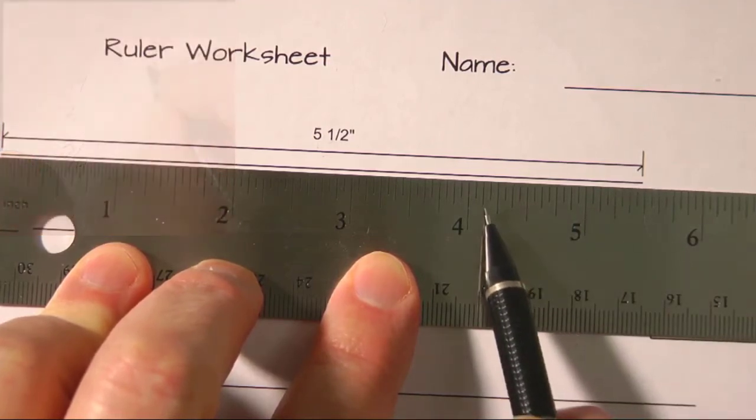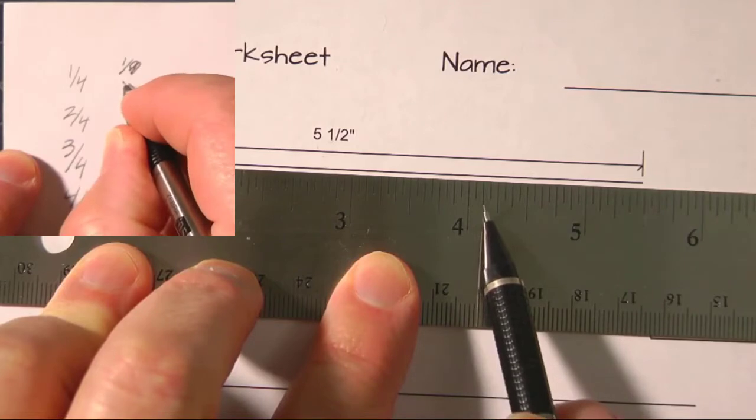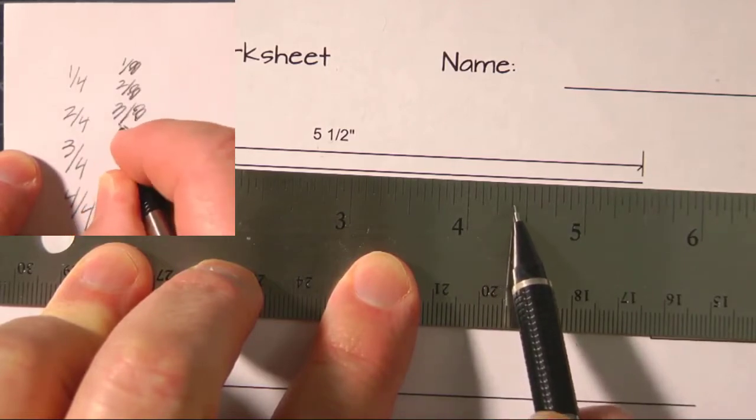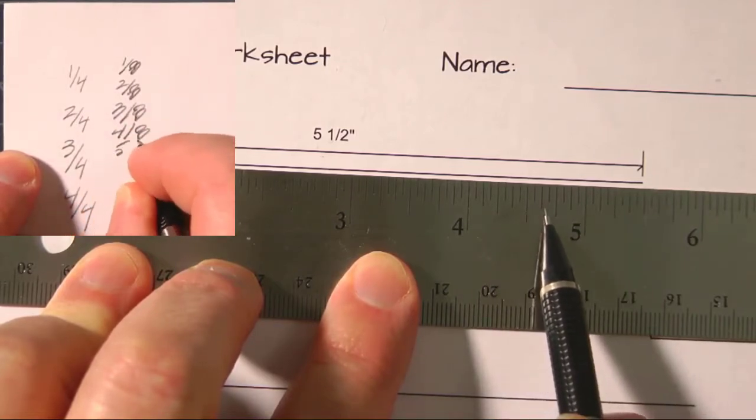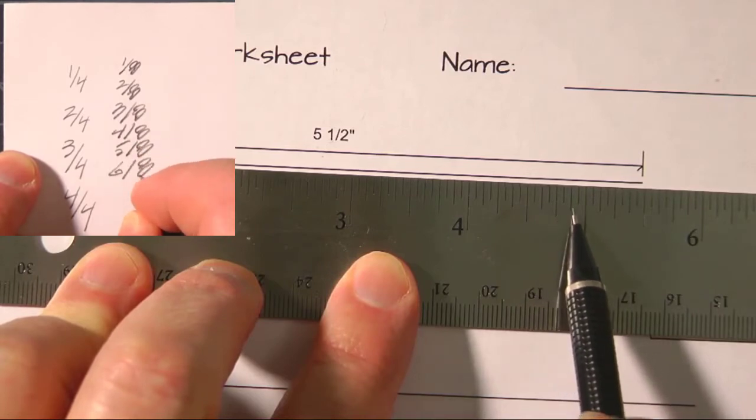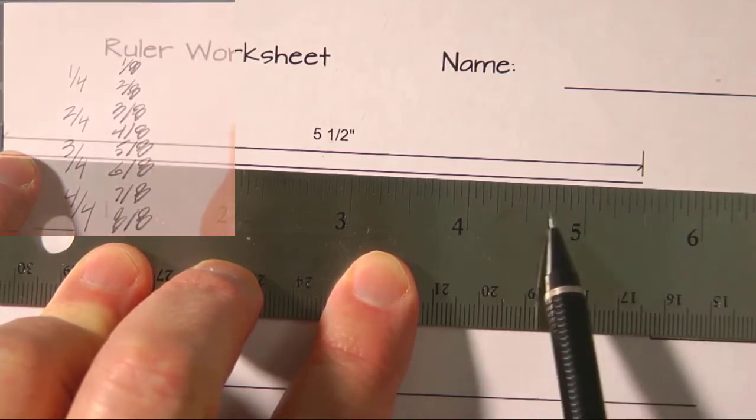We also have eighths, so we have four and one eighth, that would be two eighths, there's three, four eighths, five eighths, sixth eighths, seventh eighths, and eight eighths. So they're all there.